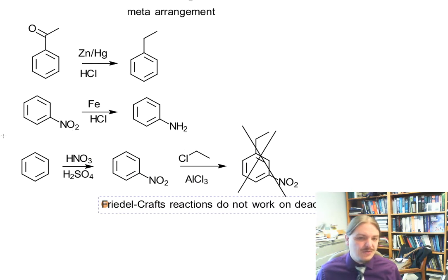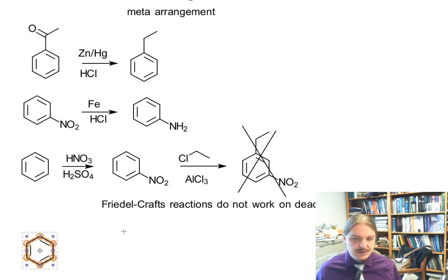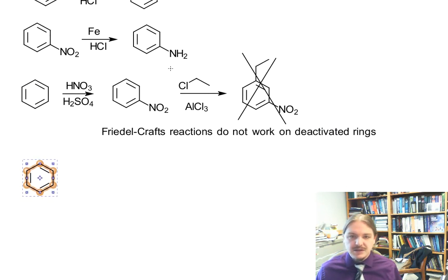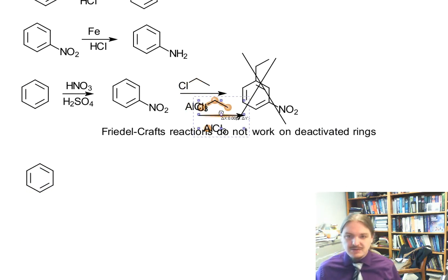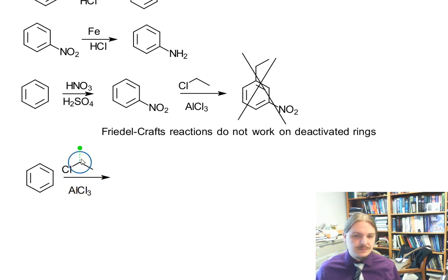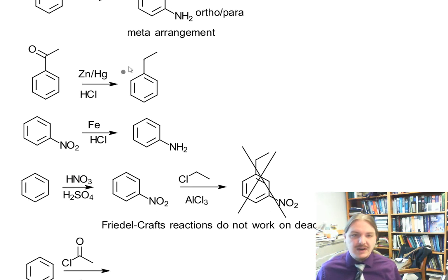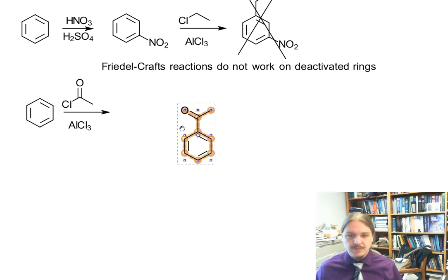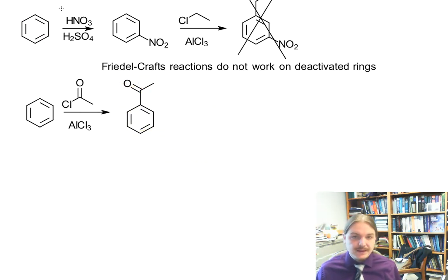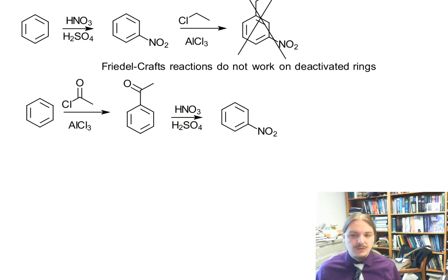That means we have to go through the other pathway. We have to put on the ketone — we have to make acetophenone. And then we can nitrate acetophenone. And then we can reduce the nitro group.